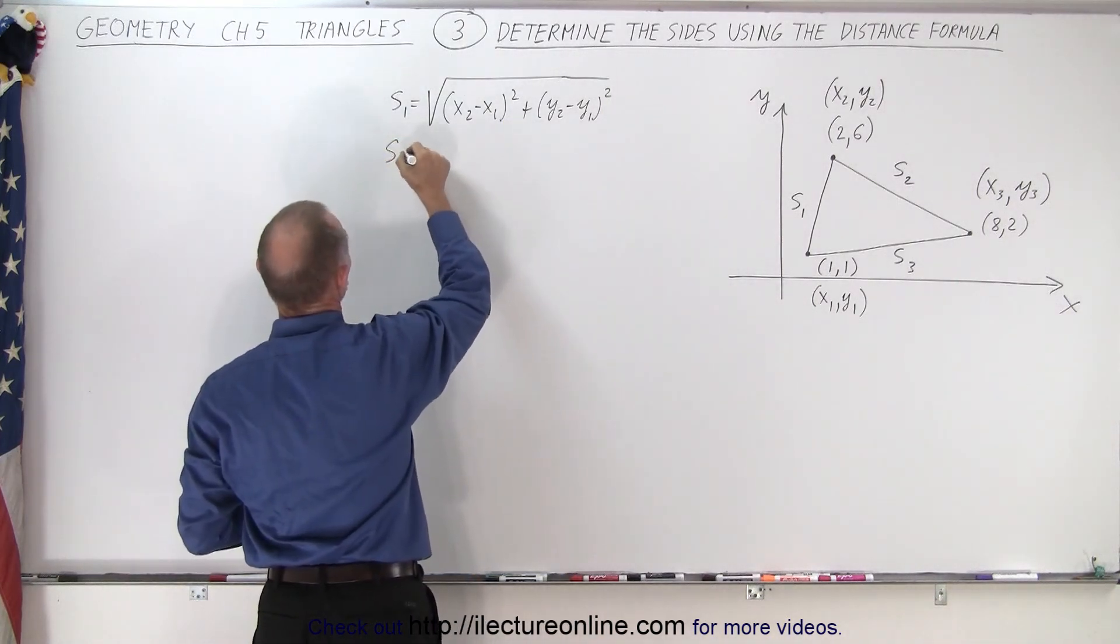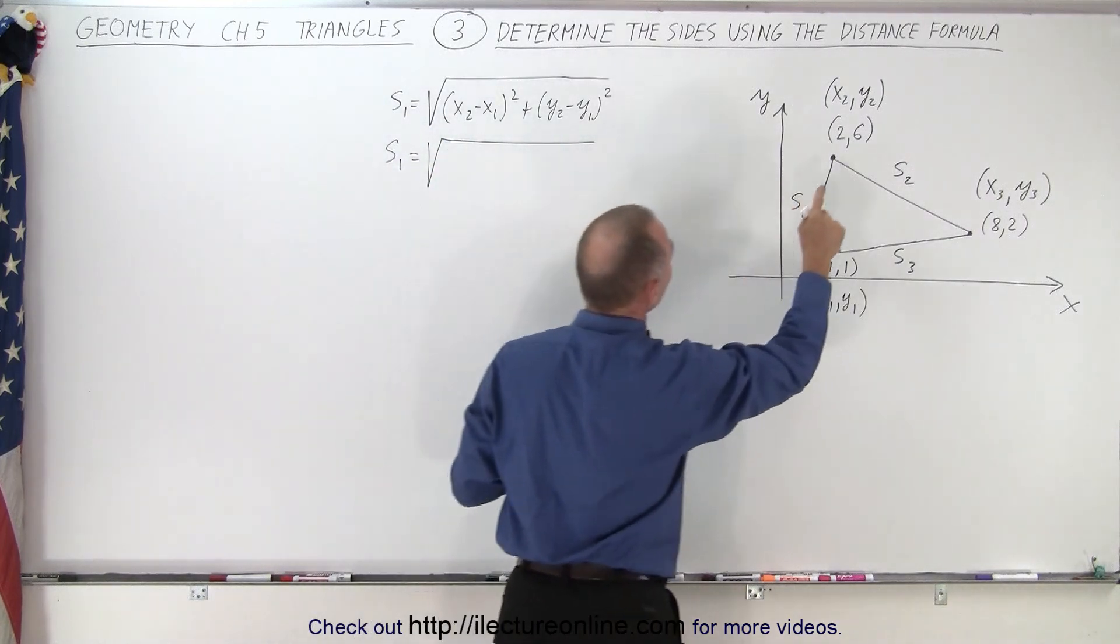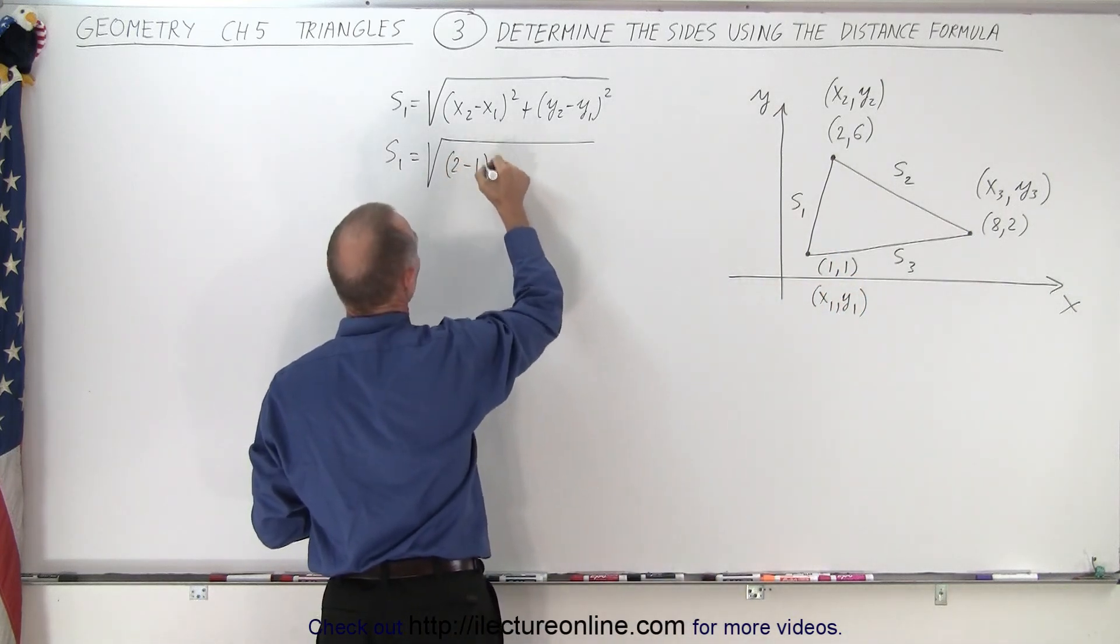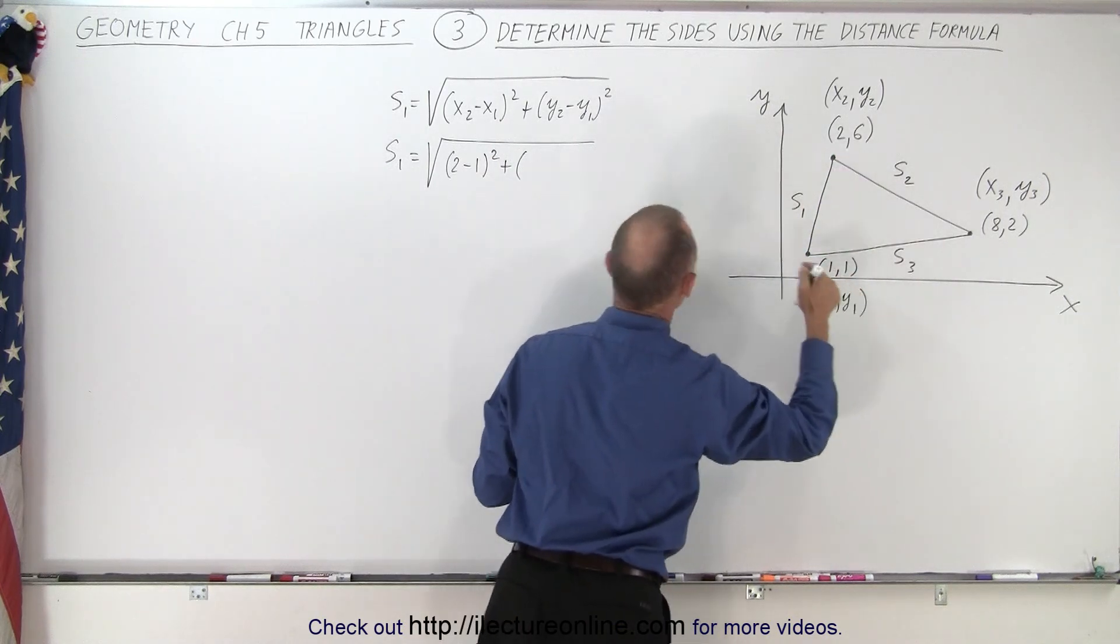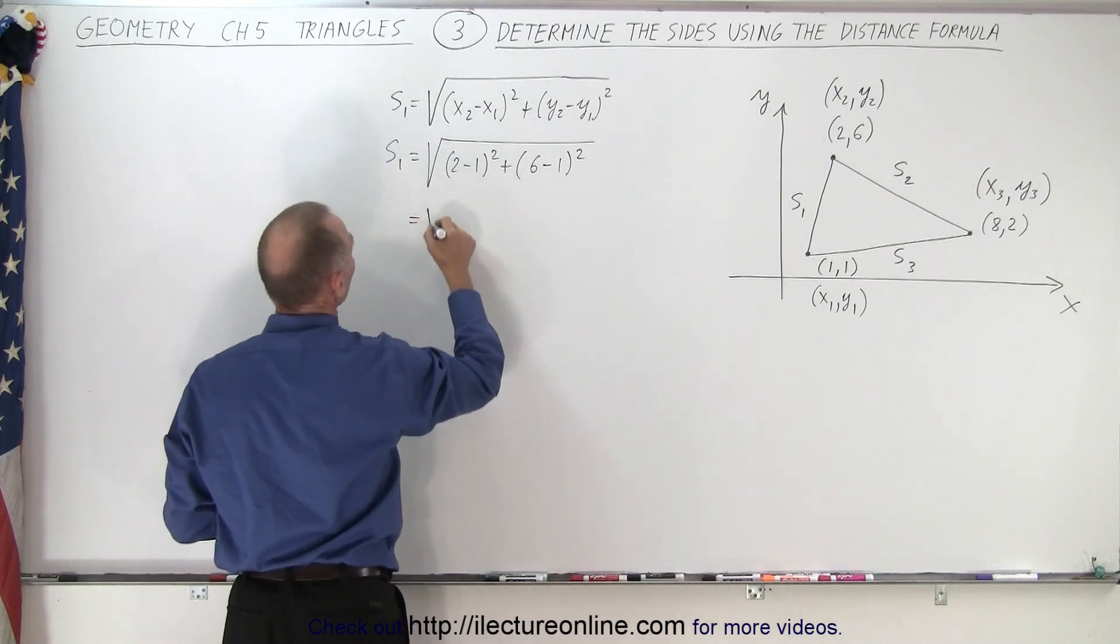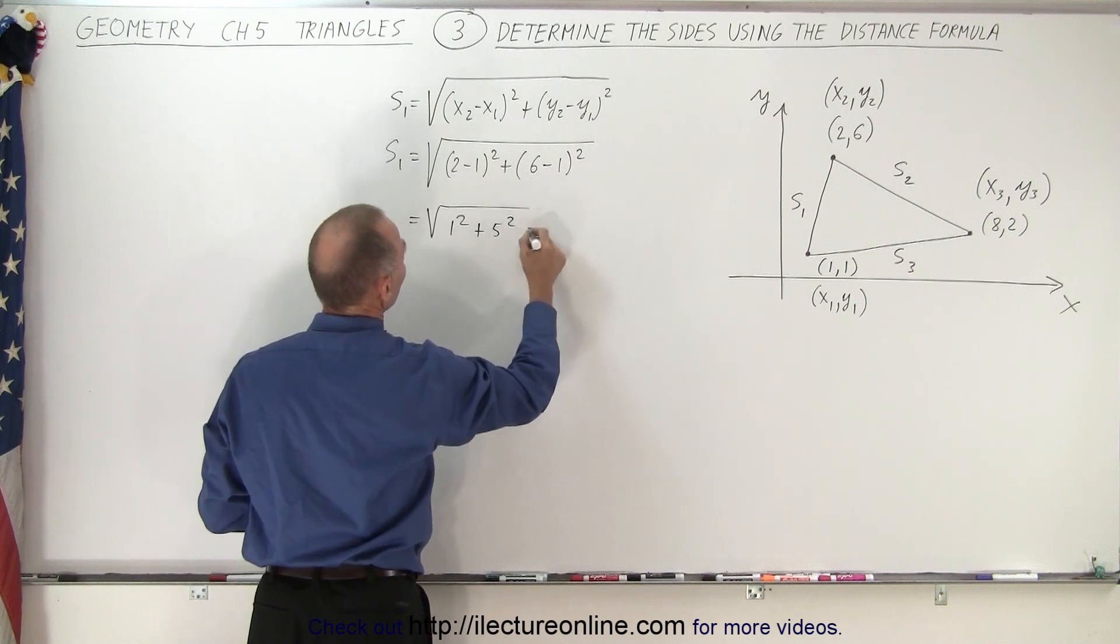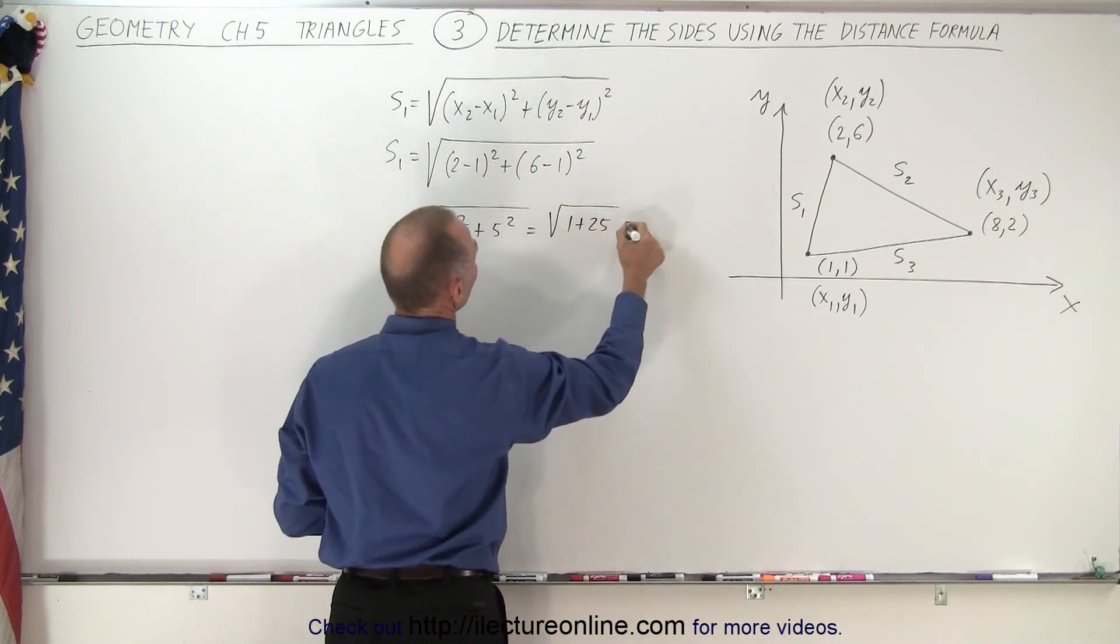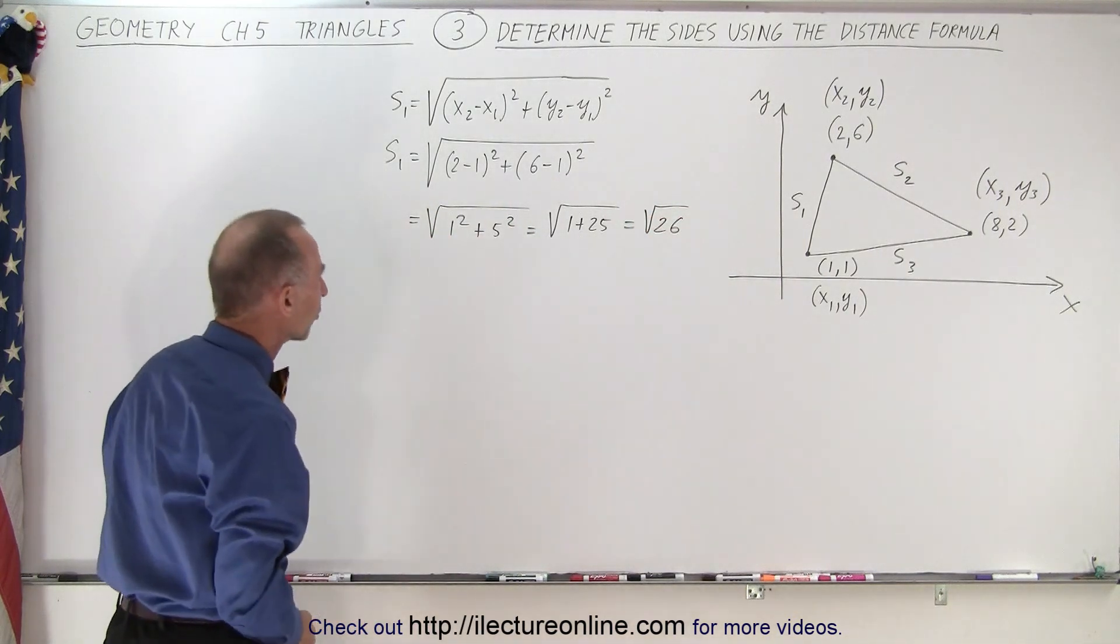Alright, plug in the numbers. S1 equals the square root of—and that's why we label them so we can easily find the points—x2 is 2, x1 is 1, so that would be (2 minus 1) squared plus y2 is 6 and y1 is 1, so (6 minus 1) squared. This equals the square root of 1 squared plus 5 squared, which equals the square root of 1 plus 25, which equals the square root of 26, so slightly more than 5 units long.